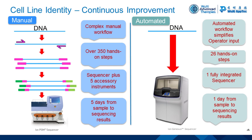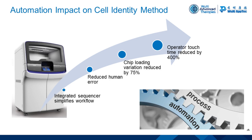While the cell identity test is a robust method, the manual procedure using the PGM involves a complex and time-consuming workflow. Recently, we have improved the method by automating the procedure on the GeneXus integrated sequencer, simplifying the workflow and reducing operator input. Over 350 hands-on steps have been reduced to only 26 steps performed by the operator. The integrated sequencer replaces the PGM plus five other accessory instruments, reducing the lab footprint, instrument maintenance, and service costs. What used to take five days from sample to sequencing results can now be accomplished in one day. Automating the workflow has reduced human error and interoperator variability — for example, variability in loading the sample into the sequencing chip has been reduced by 75%, and operator touch time reduced by 400%.